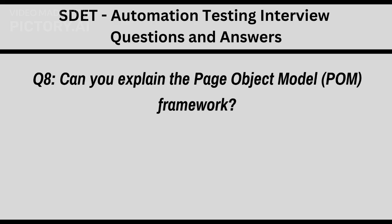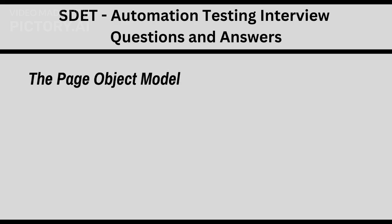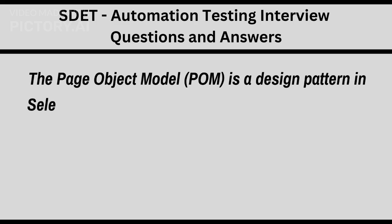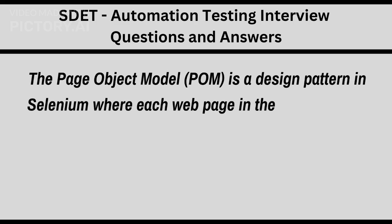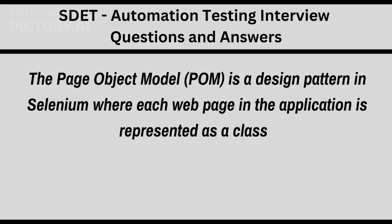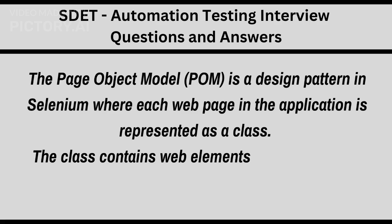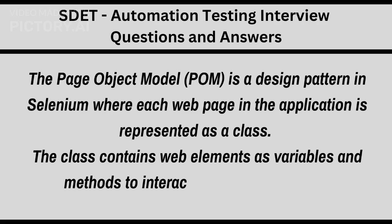The Page Object Model is a design pattern in Selenium where each webpage in the application is represented as a class. The class contains web elements as variables and methods to interact with these elements.